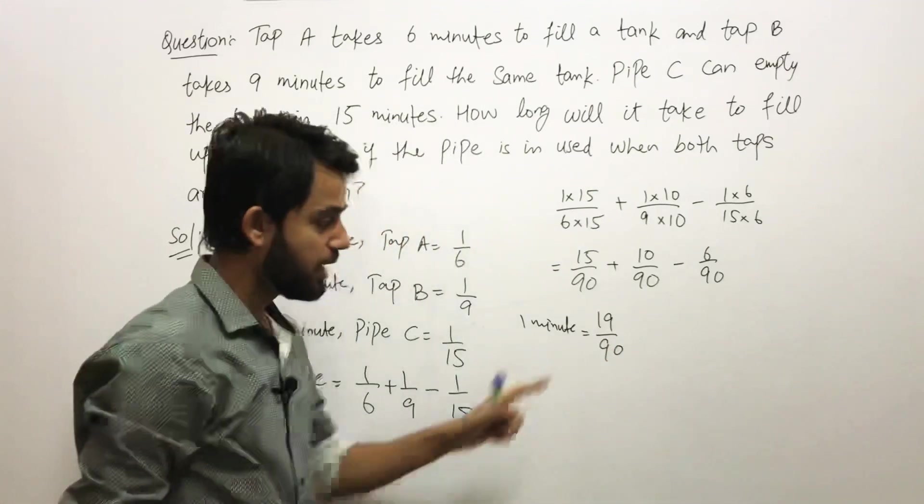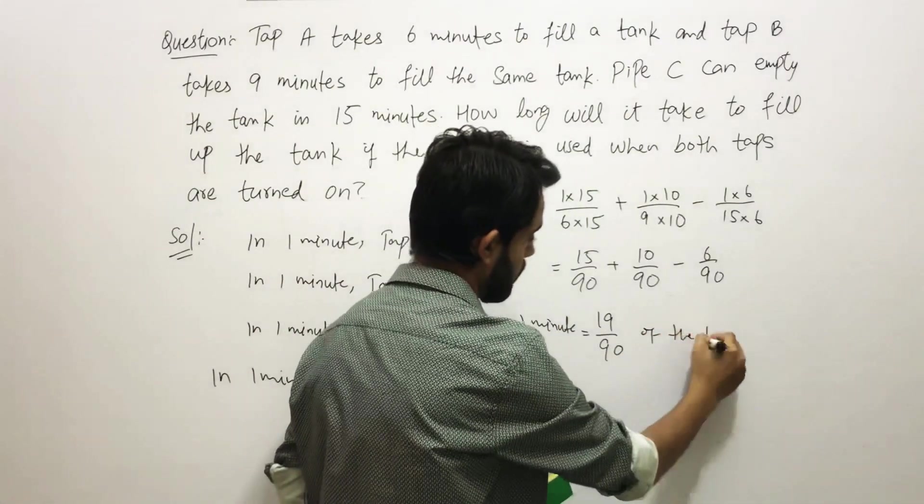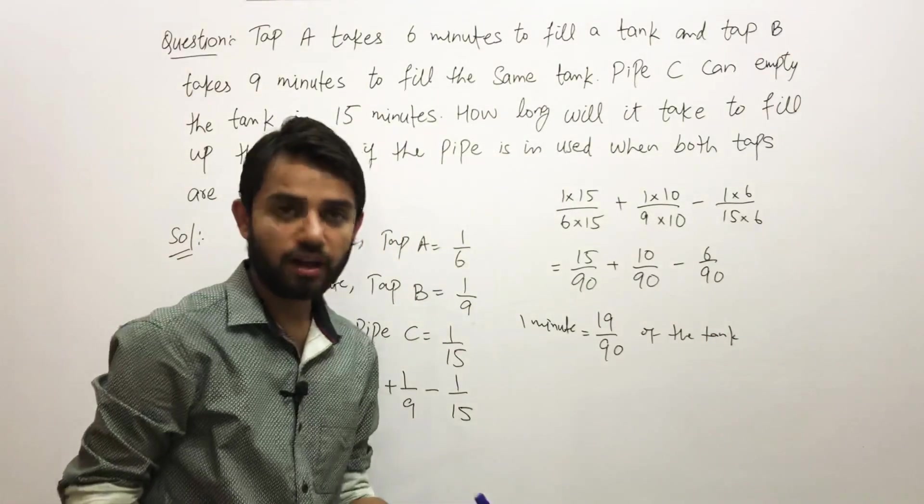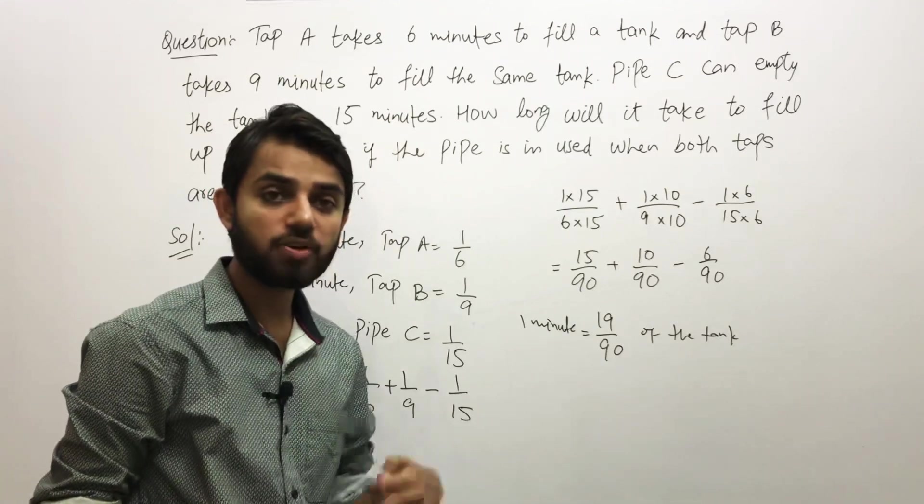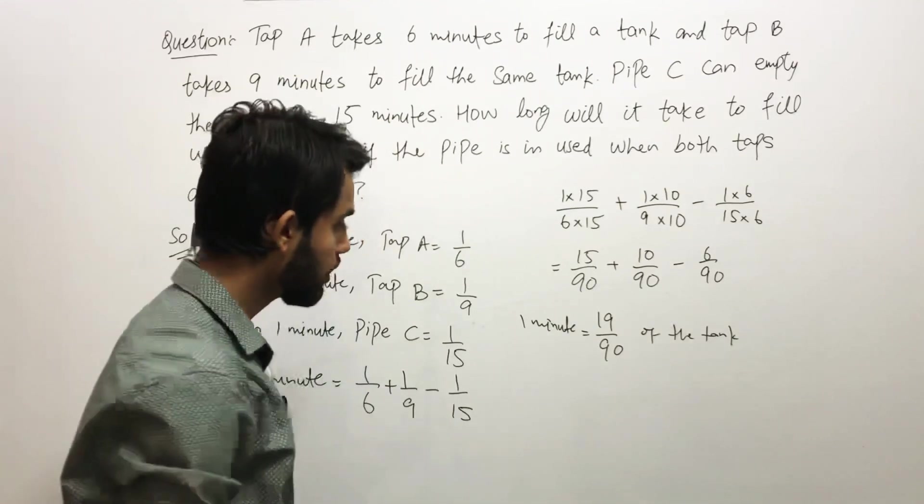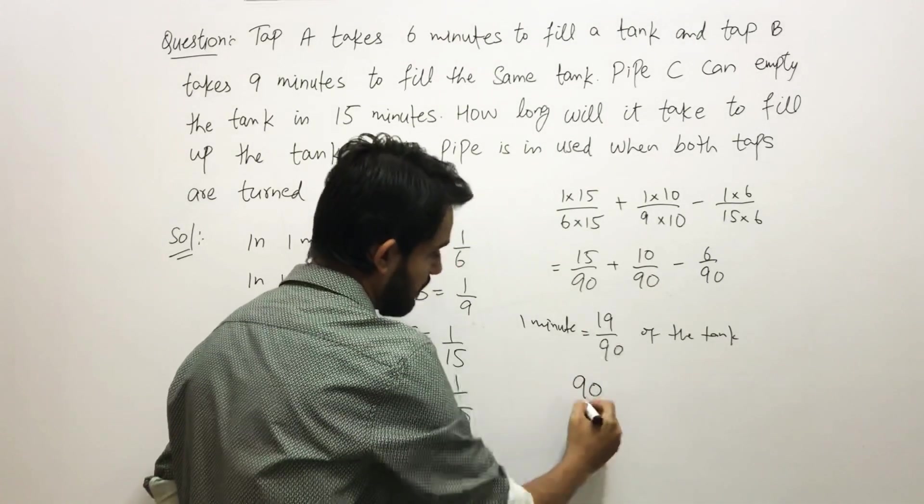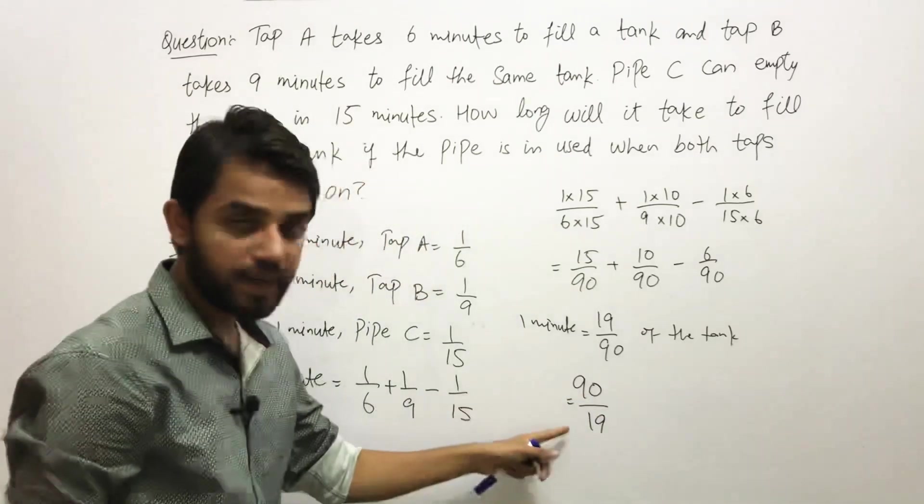In 1 minute, 19/90 of the tank is being filled when both the taps are open and also Pipe C is in use. We need to find how much time will it require, so we are going to do: 19 will come over here and 19 will come on the denominator. So 19/19 will take 90/19.